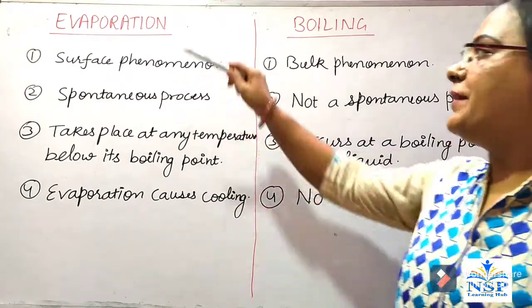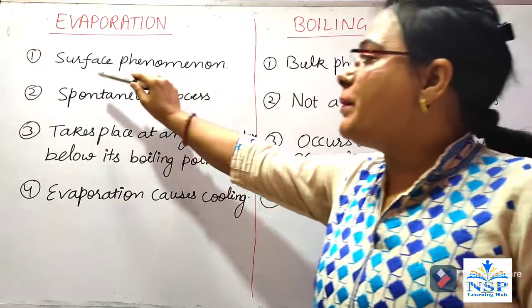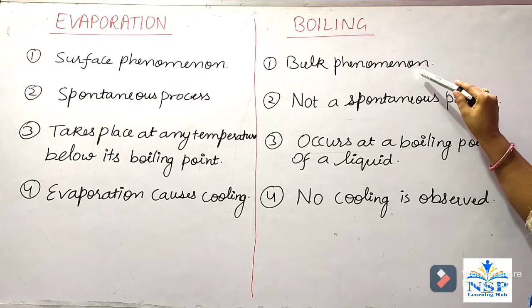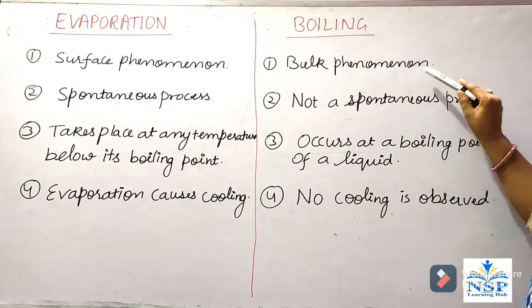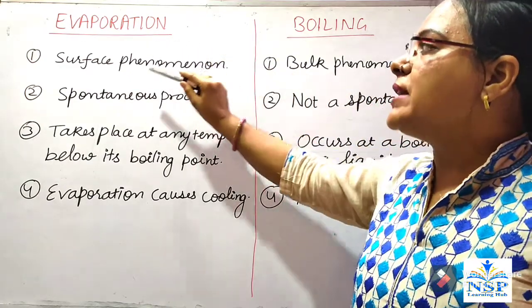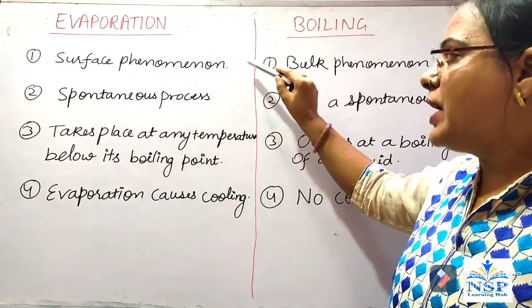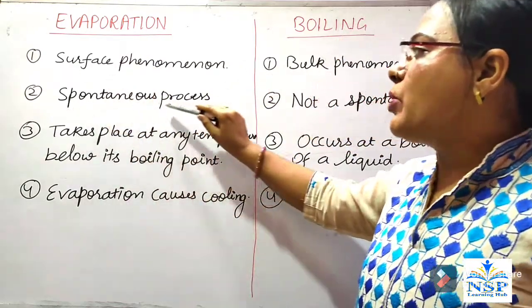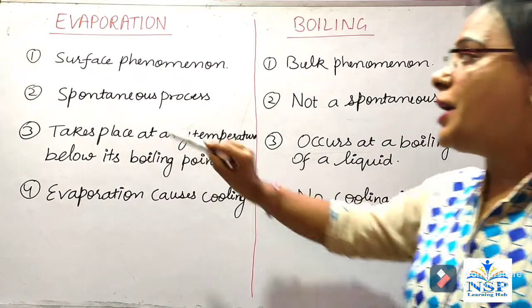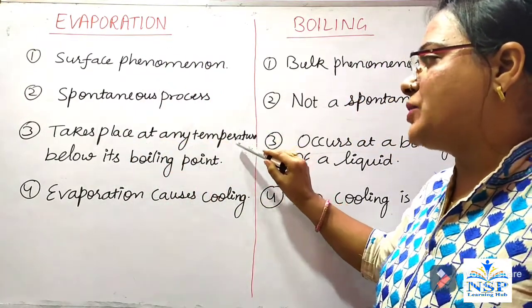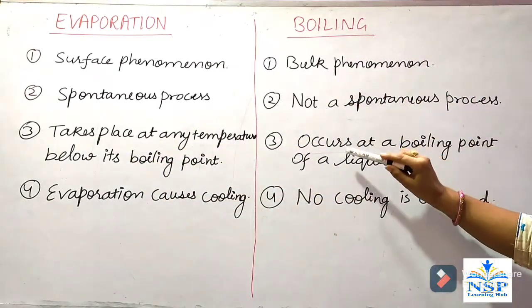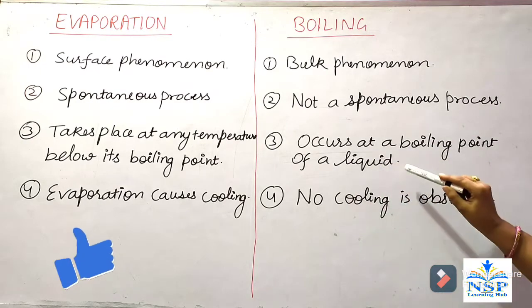Difference between evaporation and boiling: Evaporation is a surface phenomenon, whereas boiling is a bulk phenomenon — meaning boiling occurs in all particles of the liquid, but evaporation occurs only at the surface molecules of the liquid. Evaporation is a spontaneous process, but boiling is not a spontaneous process. Evaporation takes place at any temperature below its boiling point, but boiling occurs at the boiling point of the liquid.